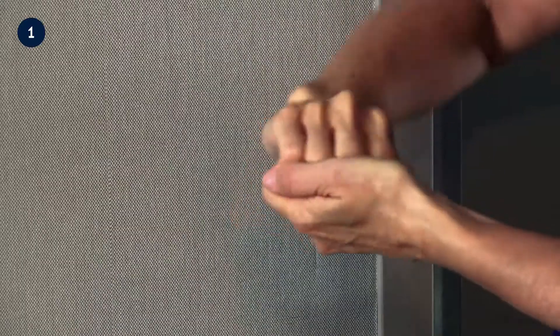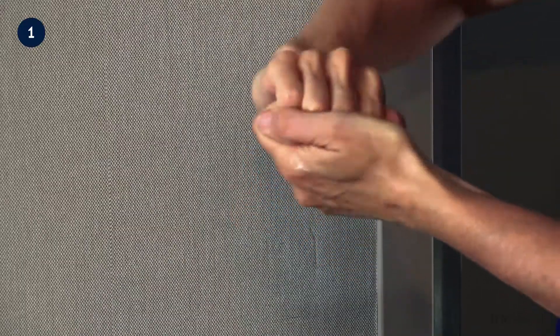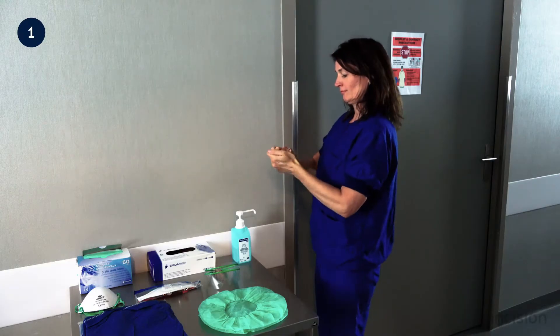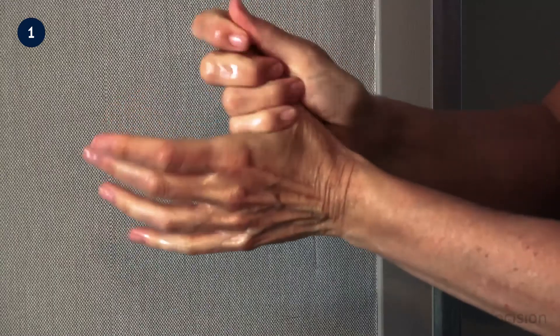The fingertips are then interlocked and the backs of the fingers are rubbed on the opposing palms. The thumbs are disinfected specifically through rotational rubbing using the opposing palm.